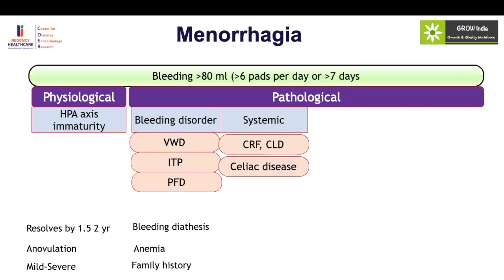Systemic causes can also lead to an immature hypothalamic-pituitary axis — a disordered HPA axis temporarily. Disorders like chronic renal failure, chronic liver disease, and celiac disease can all cause anovulatory cycles and heavy bleeding. These causes are very important in adolescent girls and are not commonly seen in adult girls. I repeat this because menorrhagia is very commonly managed by adult gynecologists, but it has a completely different etiological profile in adolescent girls. A systemic disorder should always be ruled out when looking at a girl with menorrhagia.